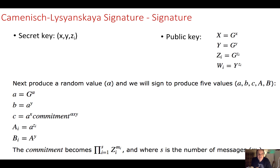We then create a signature consisting of a, b, c, and lists ai and bi. We create a random value alpha to ensure signatures always change even given the same messages. We calculate a as g to the power of alpha, b as a to the power of y, and c as a to the power of x. We take our commitment — the product of zi values to the power of our messages — raised to the power of alpha times x times y. Our list ai becomes a to the power of zi, and bi becomes ai to the power of y.